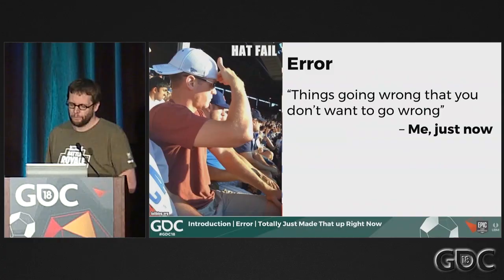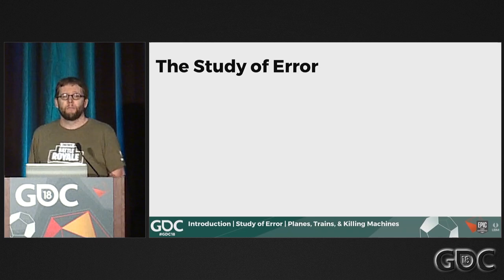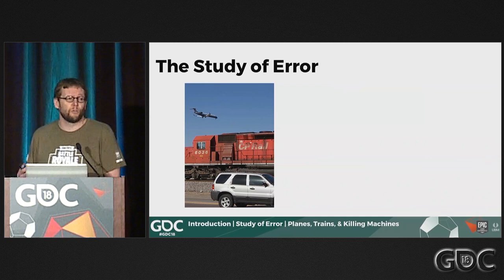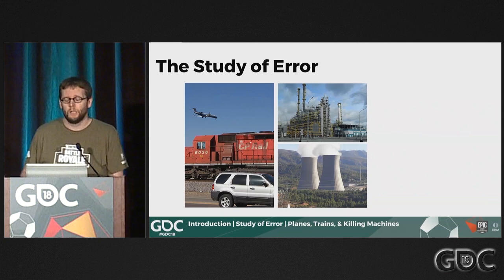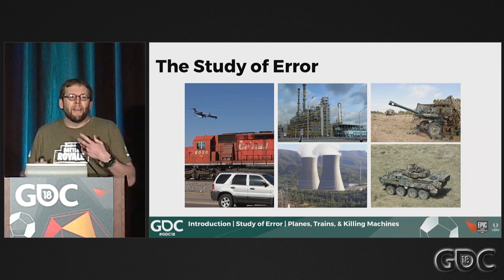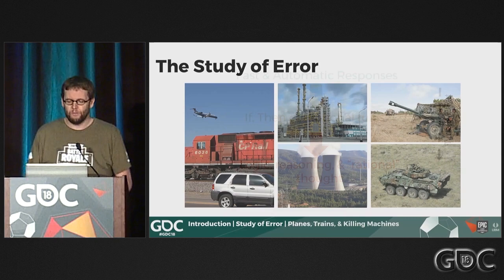So what do we know about error? It's been studied for quite a long time. Typically it's been studied in transport to make sure things don't crash, in industry to make sure things don't blow up, and in the military to help things blow up other things. And of course anything in psychology will have a nice model, so let's look at a model we can use to talk about error.